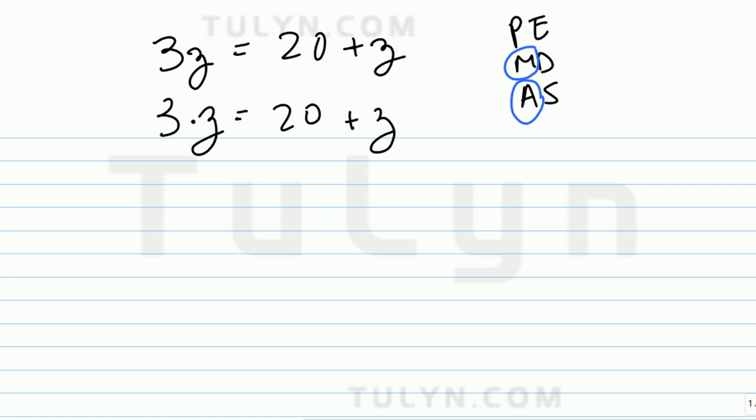Undoing addition, right? So we've got 3z, 20 plus z. Okay, so I'm going to subtract by z.